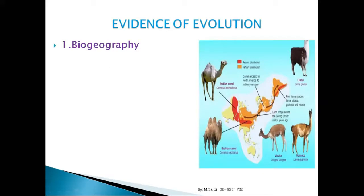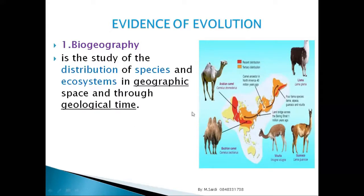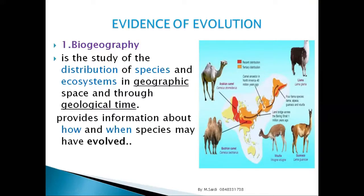Look at these camels — they have the same ancestor but they went to different areas. As they went to different areas, they modified themselves. This helps organisms adapt differently, and by studying them we can know when and how these species evolved.